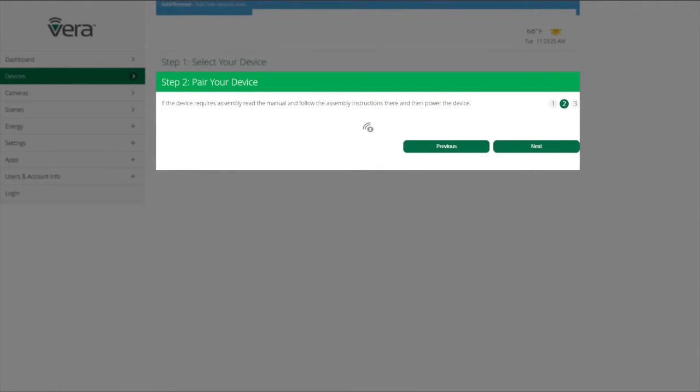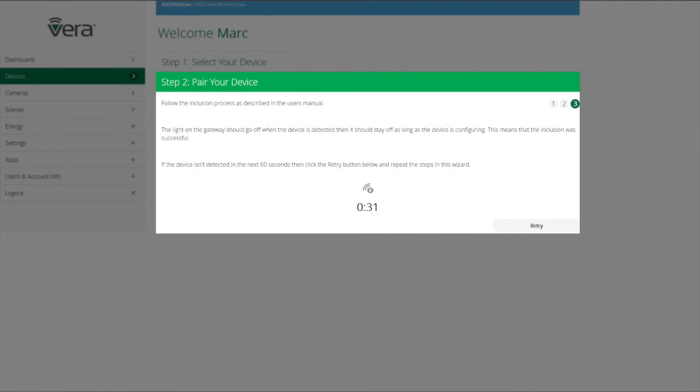Now this next step is really important. It tells us to do something that all of us just hate to do. You're going to have to open and read the manual. It's going to explain to you how to assemble the device if assembly is necessary, and it's going to tell you how to put the device into pairing mode. And when you click Next, it will go into the pairing process just like it did before. Once your device has been paired...